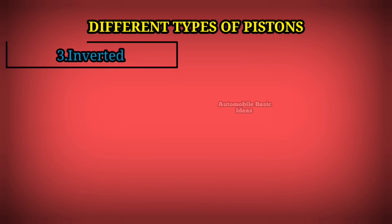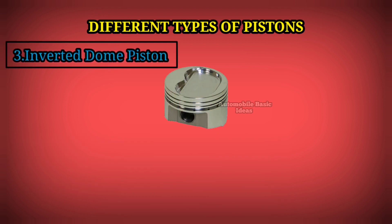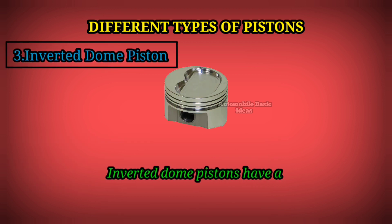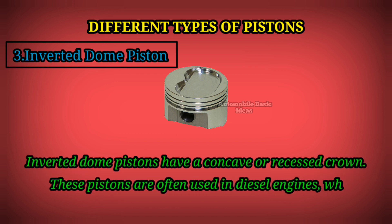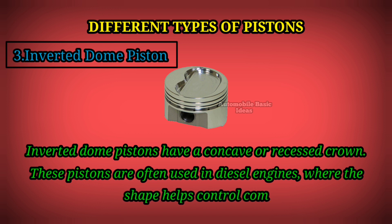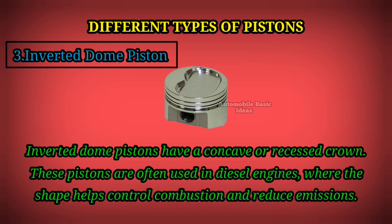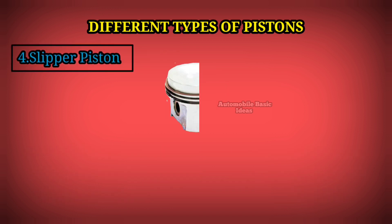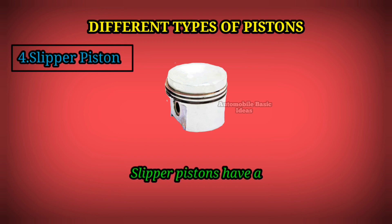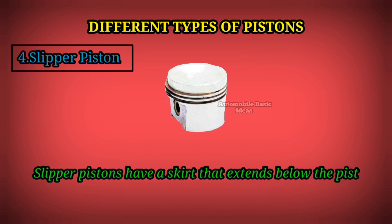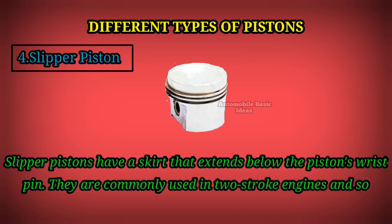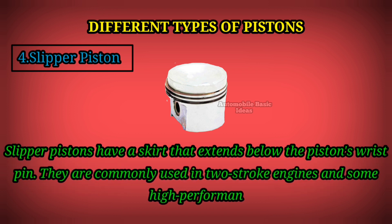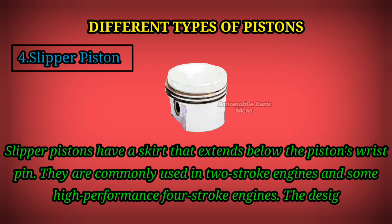Inverted dome piston: Inverted dome pistons have a concave or recessed crown. These pistons are often used in diesel engines where the shape helps control combustion and reduce emissions. Slipper pistons have a skirt that extends below the piston's wrist pin. They are commonly used in two-stroke engines and some high-performance four-stroke engines.